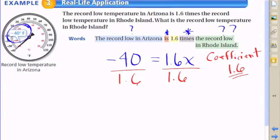That's going to isolate our variable and get x by itself, in other words solve the problem. We're going to do the math: -40 divided by 1.6, and we come out with -25.